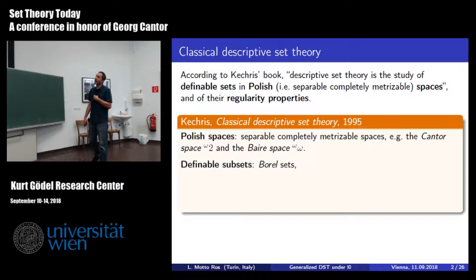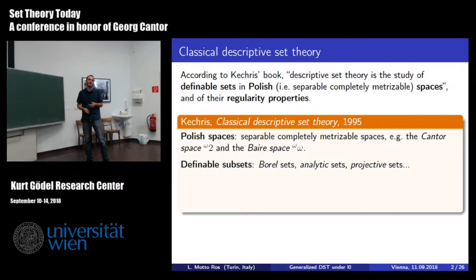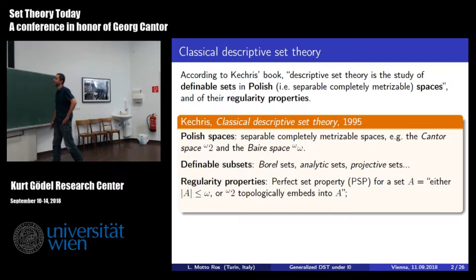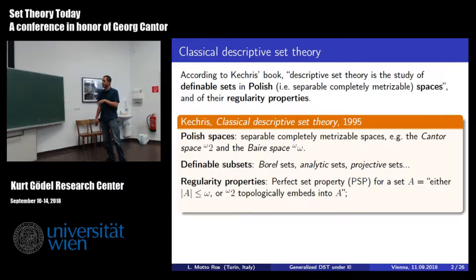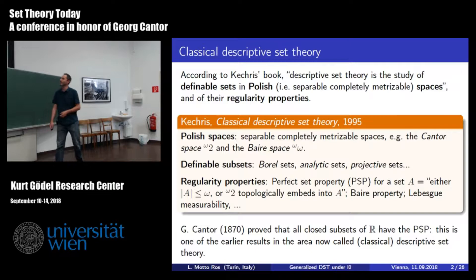What does 'definable' mean? It's a vague notion, but in this area you usually deal with Borel sets or maybe analytic sets, or various levels of definability. Then you deal with regularity properties—the perfect set property, which says that a subset of the space either has size at most the continuum, or the Cantor space topologically embeds into it. There are also many others, like the Baire property, Lebesgue measurability, and so on.